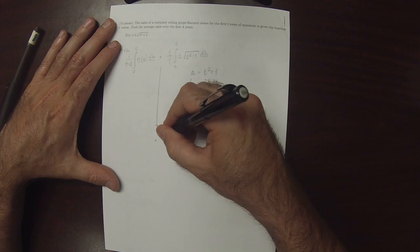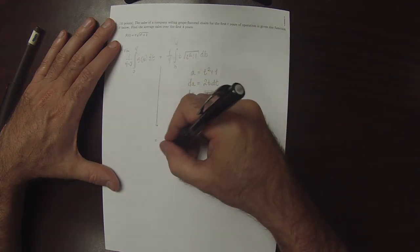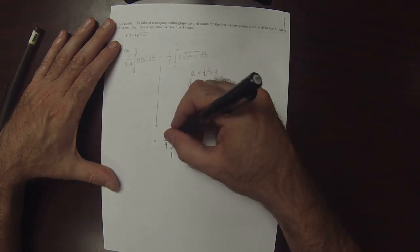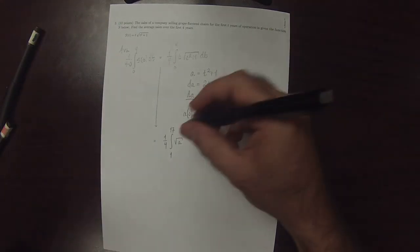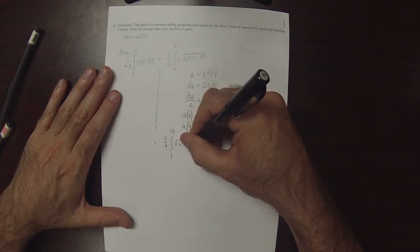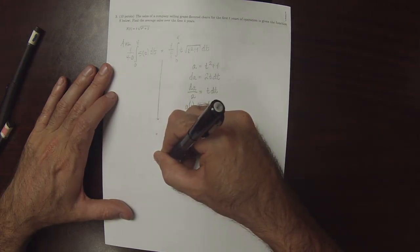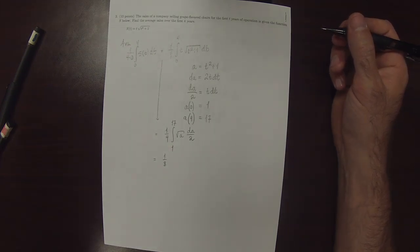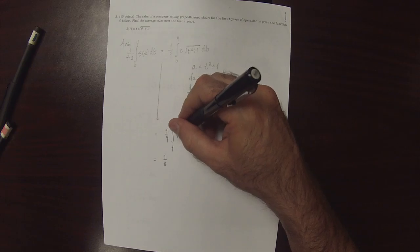So making that substitution, that would be a fourth, integral 1 to 17, square root of A, and then dA over 2. So the division by 2 can come out. Then we'll have the square root of A, and we'll need to compute its antiderivative.